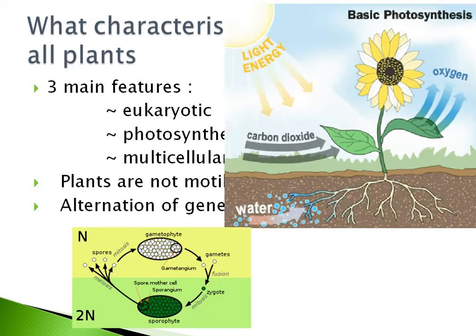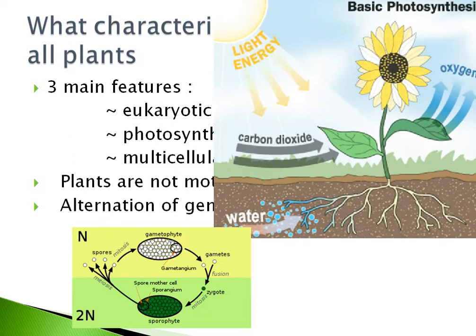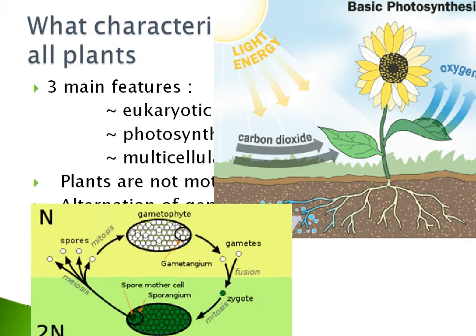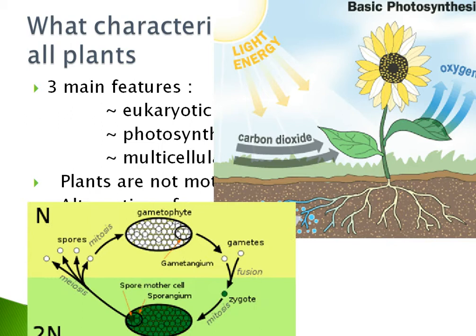Here is a diagram of basic photosynthesis. It shows that a plant absorbs energy from sunlight, and it takes in carbon dioxide and releases oxygen. And here is a diagram of the cycle of alternation of generations.